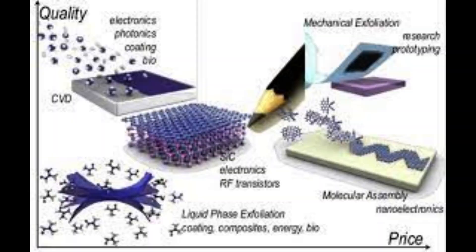Ultrasonication involves the use of high-frequency sound waves to break down graphite into graphene sheets dispersed in a solvent. It's often used in combination with other exfoliation methods.